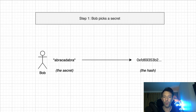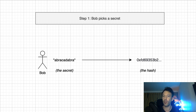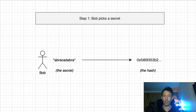First, Bob will pick a secret like 'Abracadabra'. The secret could also be picked by Alice instead — it doesn't matter. Bob will then calculate the hash of the secret. A hash is a cryptographic signature, so you can calculate the hash of any data. If you change just one bit of the input data, its hash will be completely different. You can go from the data to the hash, but not from the hash back to the original data.